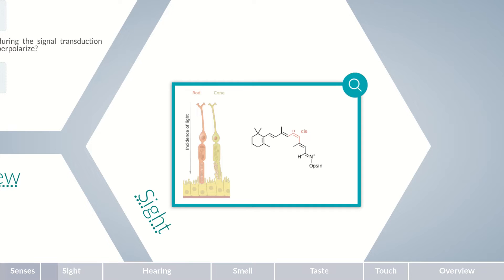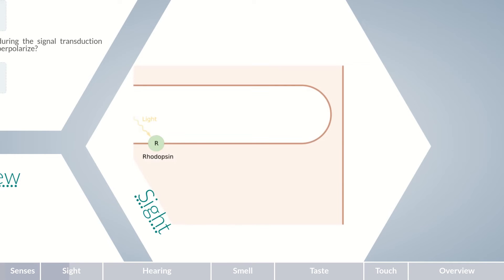As cofactors, opsins use light-sensitive molecules such as 11-cis retinol, which is present in all rod cells. When light strikes the rod cells, 11-cis retinol is converted to all-trans retinol. The protein complex of opsins and 11-cis retinol is called rhodopsin, whereas the opsins and all-trans retinol complex is termed metarhodopsin.